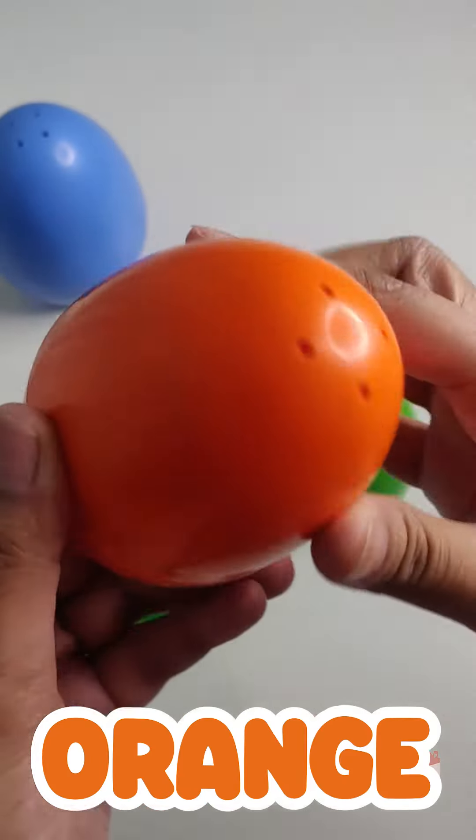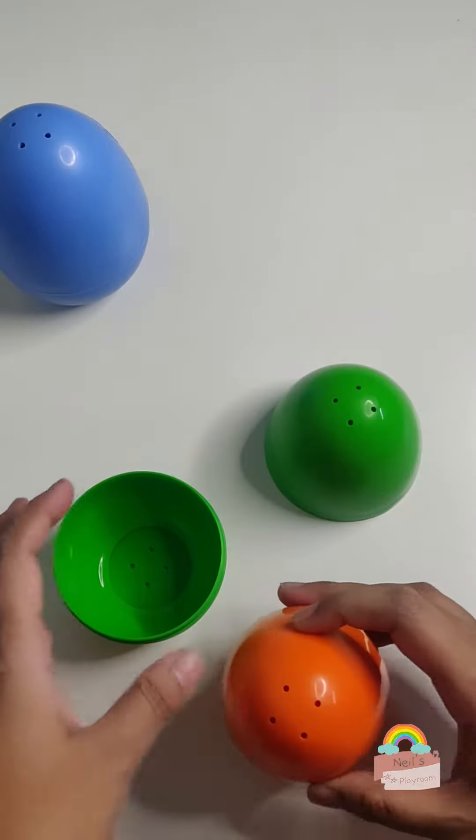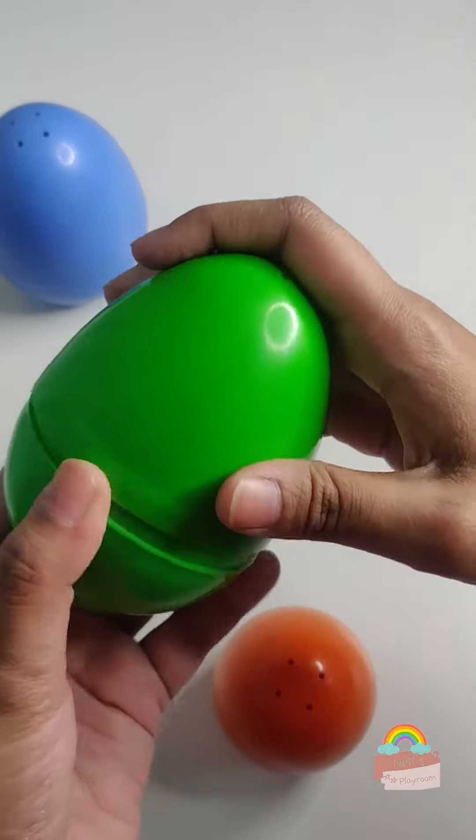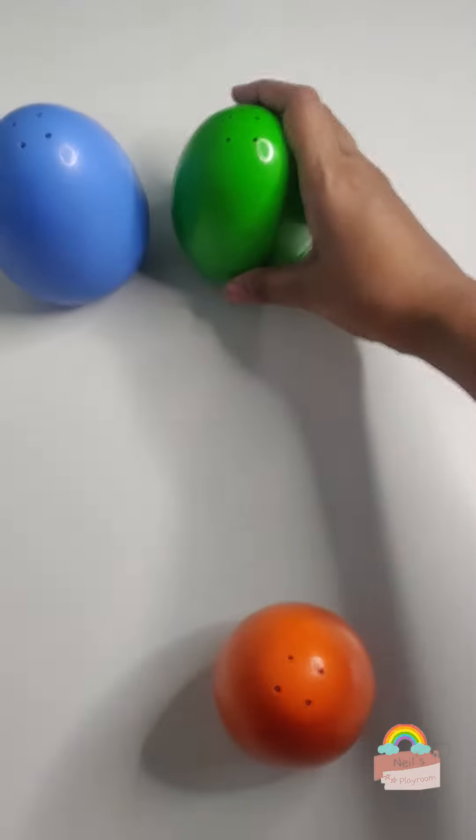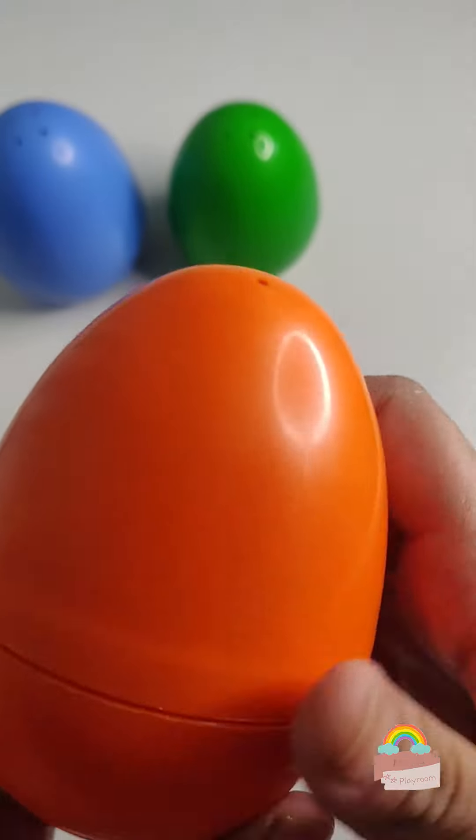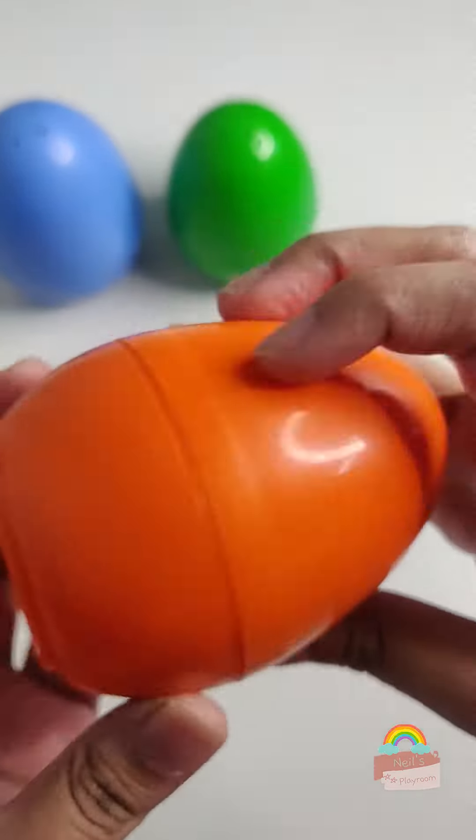Wow. What a bright color. So now we have three eggs. One blue egg, one green egg and an orange egg. What could be inside this orange egg?